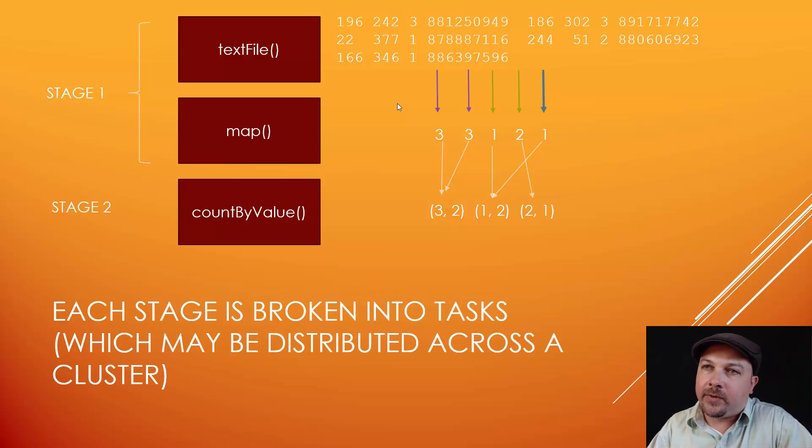And then once we have our stages, it will split those stages up into tasks. So this is where things actually get distributed. Notice that we have these sort of parallel lines of transformations going on here. Maybe it will break up these two on one node of your cluster and these two into another node of the cluster and this one onto yet another one. So the tasks just break up parallelizable tasks, if you will, into discrete pieces that can be processed individually and in parallel.